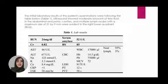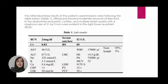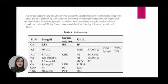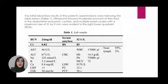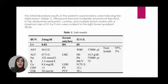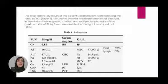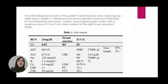The initial laboratory test results of the patient's examination are shown in the table below. As you can see, the patient had leukocytosis and thrombocytopenia. Ultrasound showed a moderate amount of free fluid in the abdomen and pelvic cavities, and multiple lymph nodes with a maximum size of 21 by 9 mm were evident in the right lower quadrant of the abdomen.